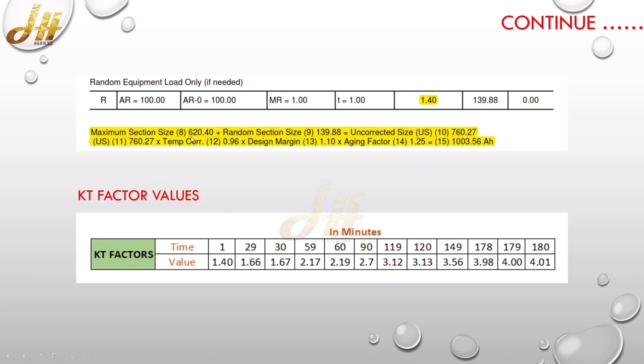So here the highlighted portion, the yellow portion, it is mentioned 620.40 because the maximum section size, which is on the fourth cycle, is 620.40. Plus, as we said, the random section size is 139.88. So the total of 620.40 plus 139.88, which is 760.27.